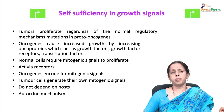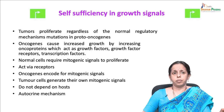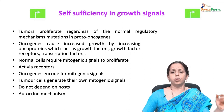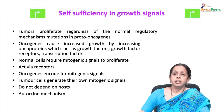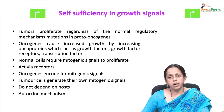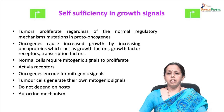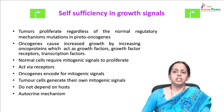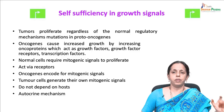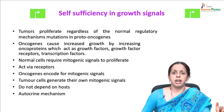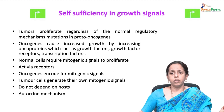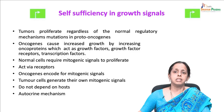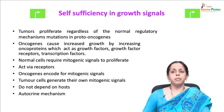Normal cells require mitogenic signals to proliferate. Oncogenes encode for mitotic signals; they may produce growth factor ligands, which they can respond to via the expression of cognate receptors, resulting in autocrine proliferating stimulation. These cancer cells in turn send signals to the normal cells within the tumor — where supporting cells send signals stimulating normal cells within the supporting tumor-infiltrated stroma.